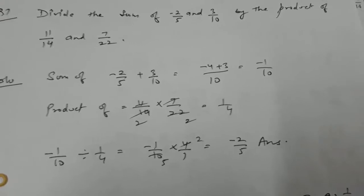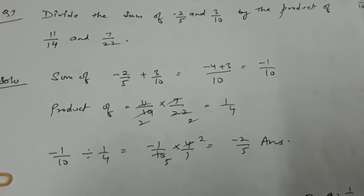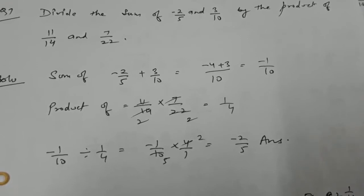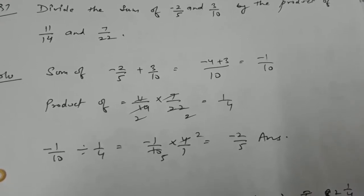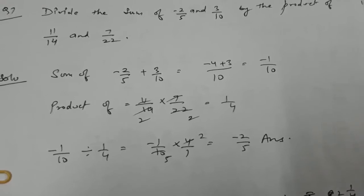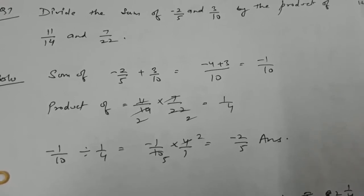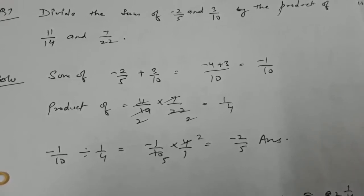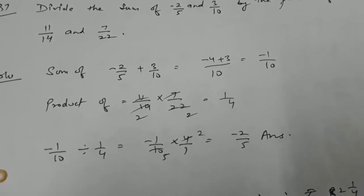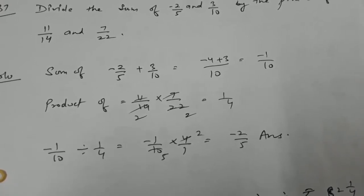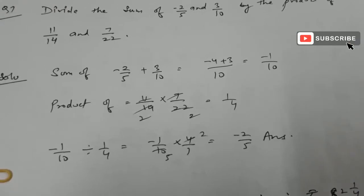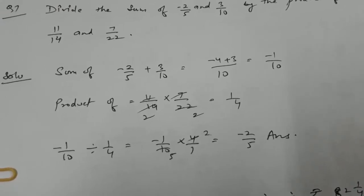The sum gives minus 4 plus 3 by 10, that is minus 1 by 10. The product of 11 by 14 into 7 by 22, after cancellation, comes as 1 by 4. Now we divide minus 1 by 10 by 1 by 4, that is minus 1 by 10 into 4 by 1. After cancellation the answer is minus 2 by 5.